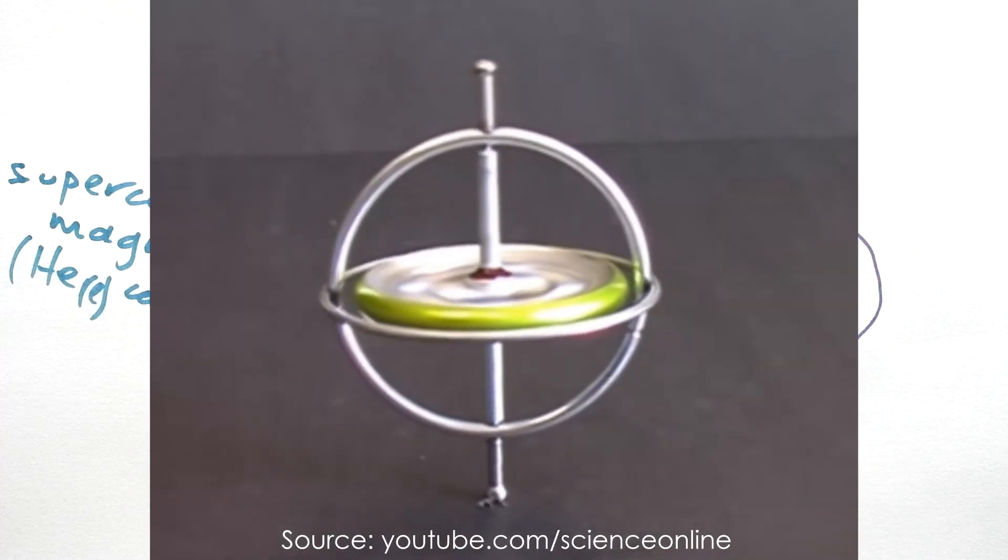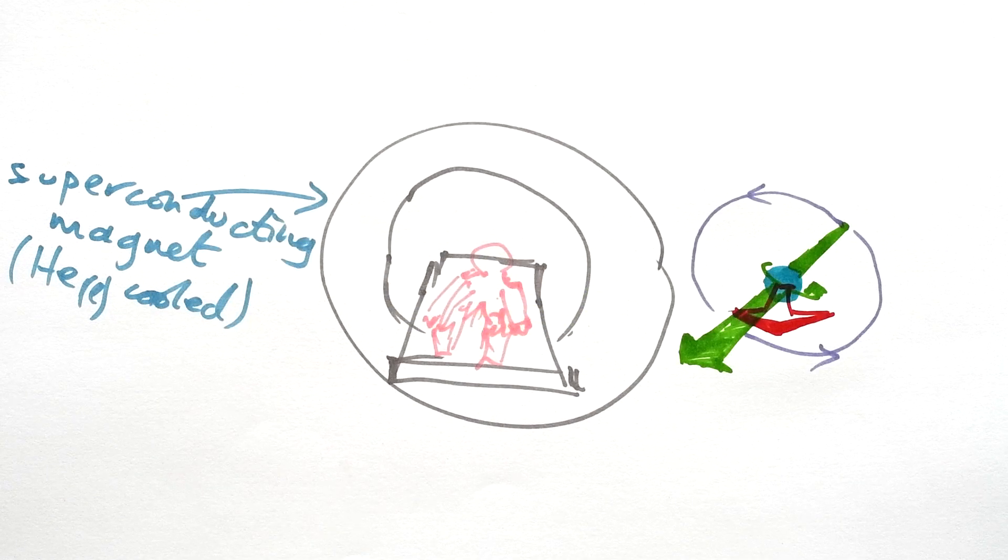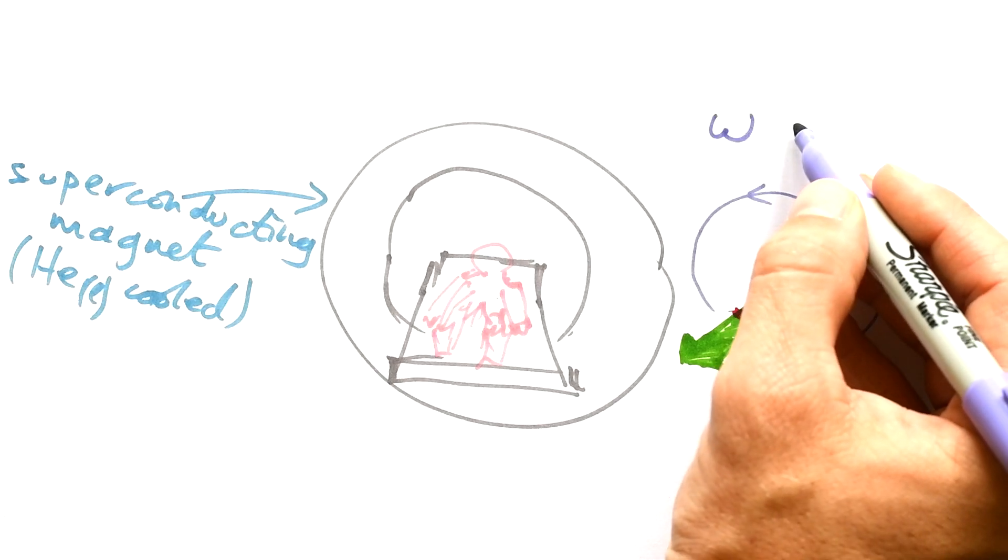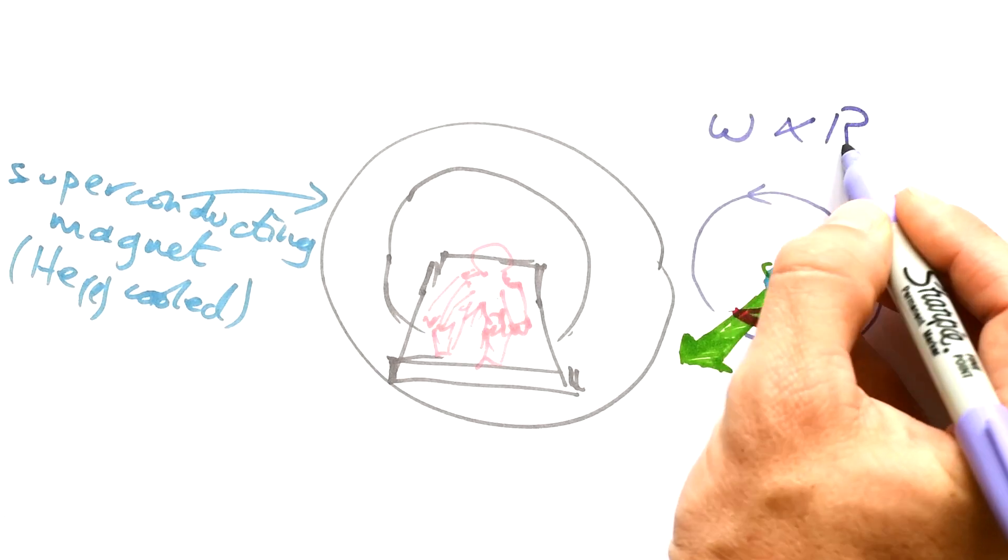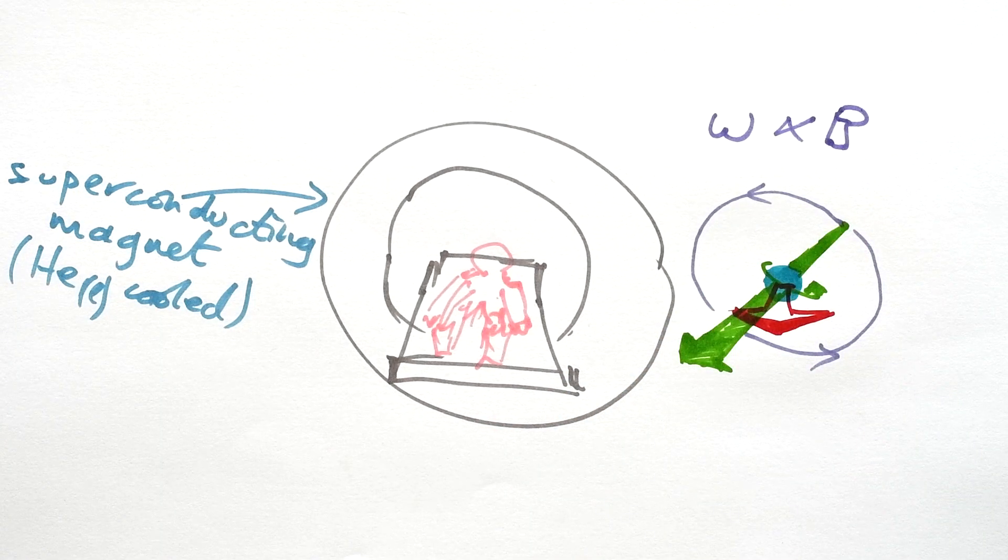So because the direction of the magnetic field is the same for all of these protons, that means that all of these protons are going to precess in the same direction. The speed at which they precess has an angular frequency and that is proportional to the magnetic field strength, or rather we should say flux density. That makes sense. If there's no magnetic flux density, then they won't precess. The bigger the magnetic field, the faster they'll precess.